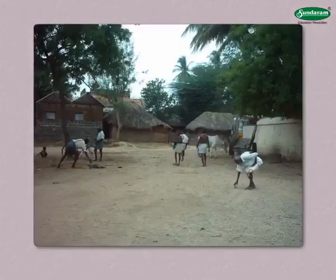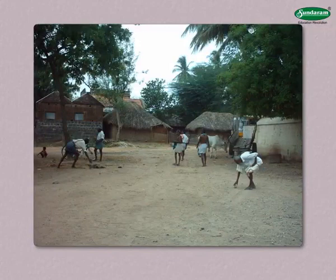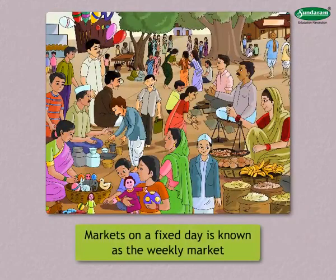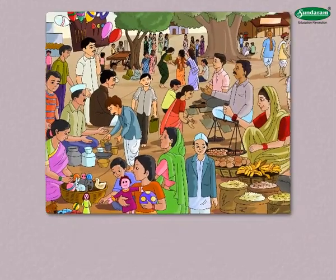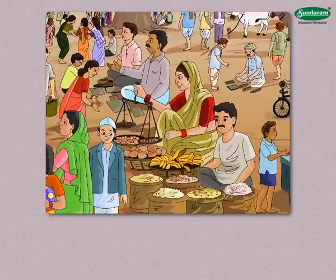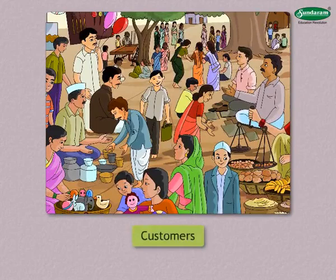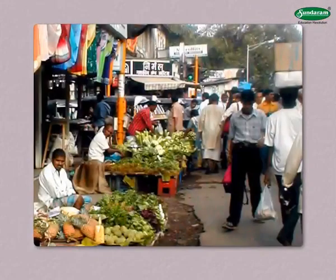Weekly market. The population of small villages is small, hence they have fewer shops. Such villages have to depend on bigger villages for their purchases. Some big villages hold markets on a fixed day. This is known as the weekly market. Traders from nearby villages come to sell different types of goods in this market. People from the villages come to purchase these goods and are called customers. Apart from these weekly markets, there are some other shops where buying and selling goes on every day.